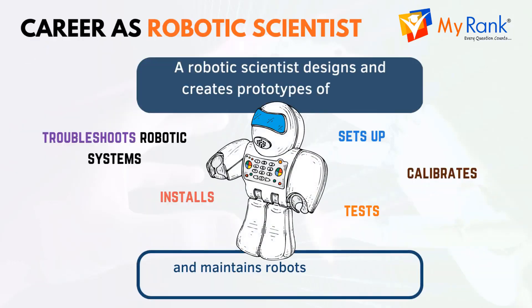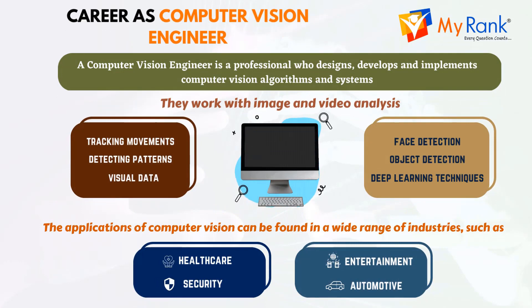A robotic scientist designs and creates prototypes of robots, sets up, configures, tests, and troubleshoots robotic systems, installs, calibrates, and maintains robots for optimal performance. They ensure that the robotic machines function safely, consistently, and with accuracy, and continuously work towards improving and refining their design through modification. A computer vision engineer is a professional who designs, develops, and implements computer vision algorithms and systems. They work with image and video analysis, pattern recognition, object detection, and deep learning techniques to create systems that can interpret and understand visual data. The goal is to create computer systems that can perform tasks such as recognizing objects and faces, tracking movements, and detecting patterns.